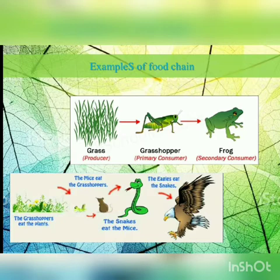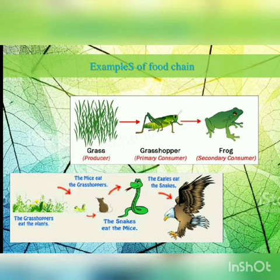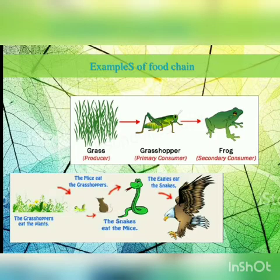Eagle is the apex predator. As discussed in the last session, apex predators are organisms that are not eaten by any other organism. They are always at the top of the food chain.